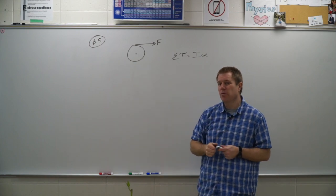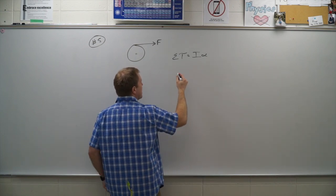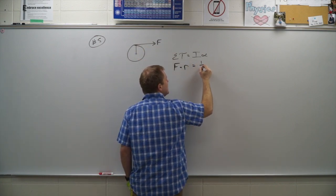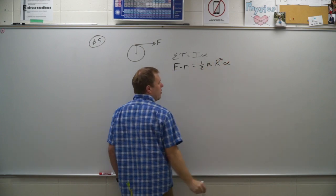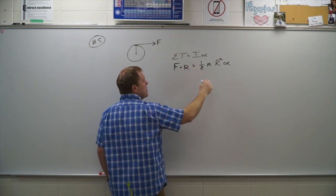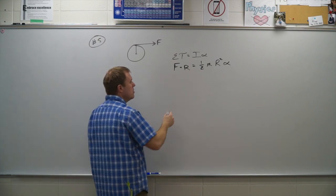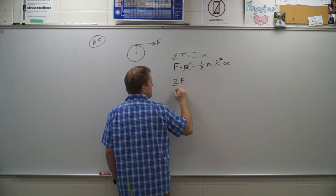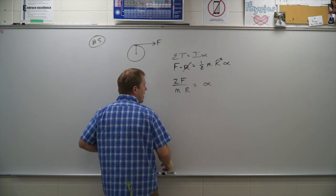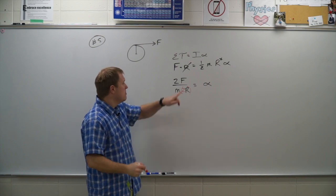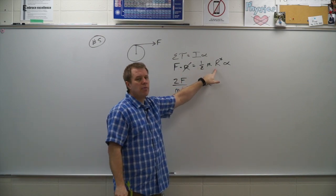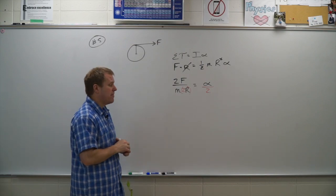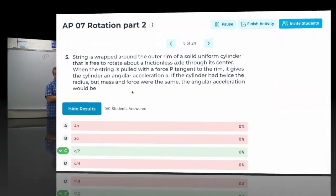If we double the radius with everything else the same: torque equals force times radius, and for a disc, moment of inertia is ½mR². Setting F·R = ½mR²·α and solving for alpha gives 2F/(mR). When we double R, even though it produces more torque, the moment of inertia grows faster since it's squared. One radius cancels, so the acceleration decreases by a factor of two. Correct answer: C.